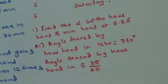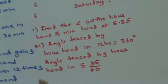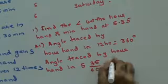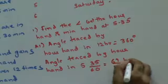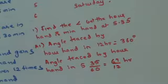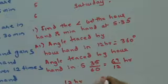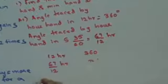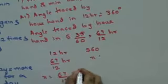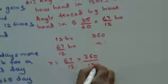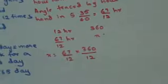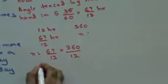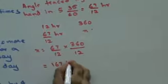To convert 35 minutes to hours, divide by 60, giving 67/12 hours. So angle traced by the hour hand equals 67/12 × 360/12, which simplifies to 167.5 degrees. When the time is 5:35, the hour hand has traced 167.5 degrees.